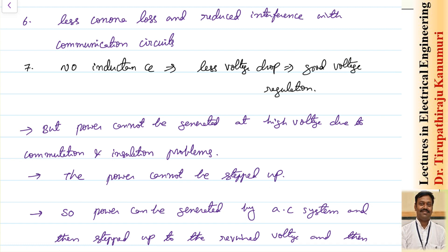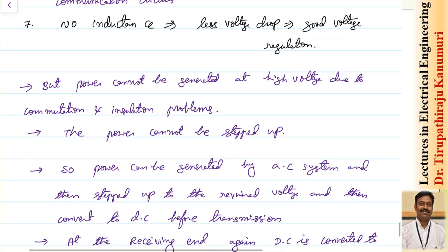There is less corona loss and reduced interference with communication circuits — these are discussed in detail in the corona and telecom interference topics. As there is no inductance, there will be less voltage drop, and as the voltage drop is less, it gives very good voltage regulation.